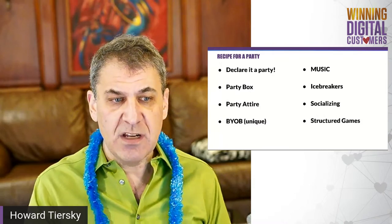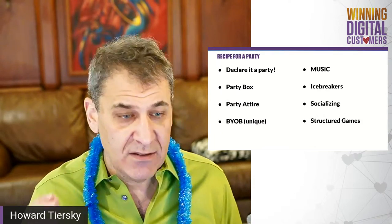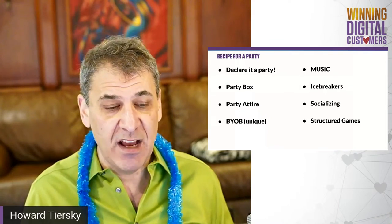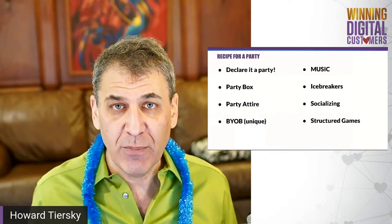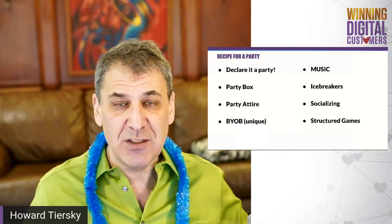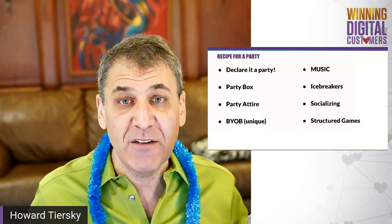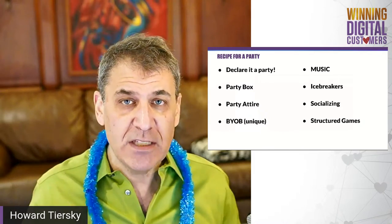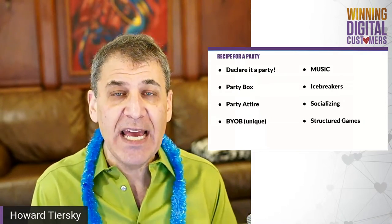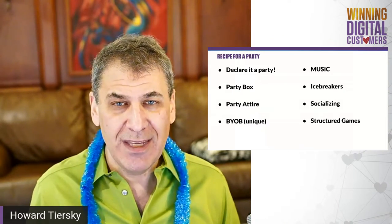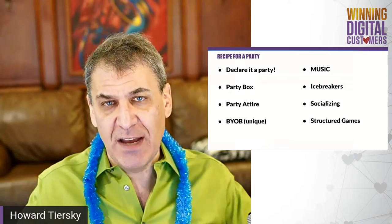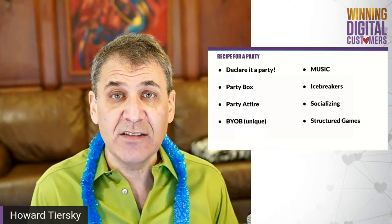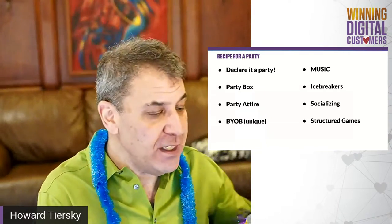So to recap our eight tips: declare it a party; send people a party box with snacks, costume items, and other fun things; make sure people wear their party attire and give them permission to let themselves loose; encourage them to bring their own beverage — wine, beer, mixed drinks, or non-alcoholic, something fun that reflects them; play music; use ice breakers; find ways for people to socialize in appropriately sized groups using breakout rooms; and have some structured games — especially for more introverted people who don't want to just chit-chat the whole time.